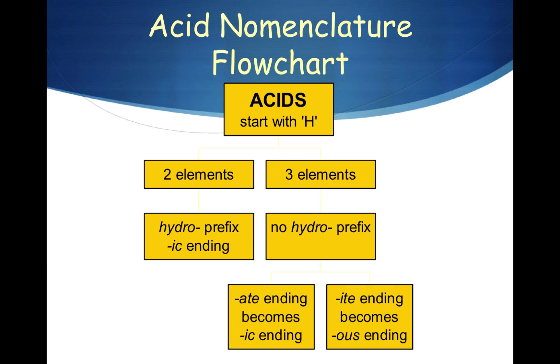hydrobromic, hydroiodic, those have only two elements and they always begin with hydrogen. So we're only talking about hydrogen and a non-metallic anion.